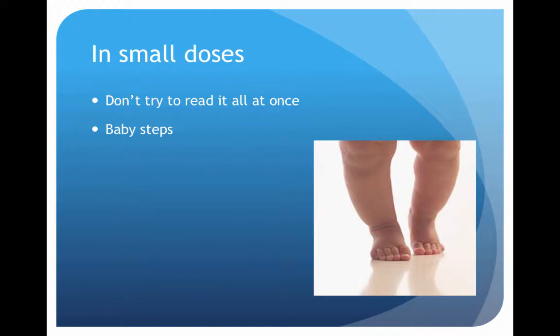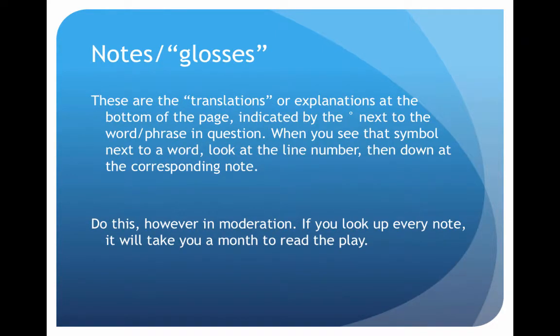If you stop here and get your book and look at the text we're going to read, you'll notice the glosses at the bottom of the page. There are small little circles next to words that the editors of our book think you might not know, and you're supposed to look down at the bottom of the page, find the line number, and they give you the modern English translation. You can't look down at every one — it'll take you so long to read the play and it will really break up your rhythm.